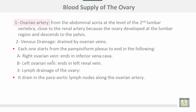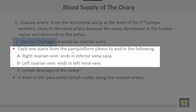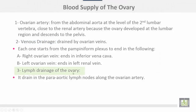The blood supply of the ovary comes from the ovarian artery, which arises from the abdominal aorta at the level of the second lumbar vertebra, close to the renal artery, because the ovary developed at the lumbar region and descended to the pelvis. Venous drainage is by the ovarian veins, each starting from the pampiniform plexus. The right ovarian vein ends directly in the inferior vena cava, while the left ovarian vein ends in the left renal vein. Lymphatic drainage of the ovary goes to the para-aortic lymph nodes along the ovarian artery.